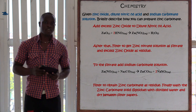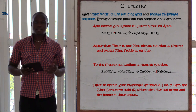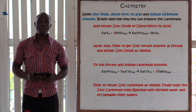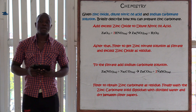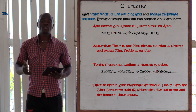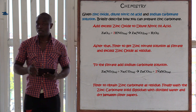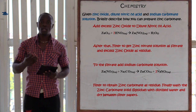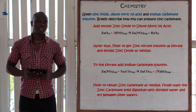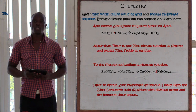Question number five: given zinc, excess zinc oxide, dilute nitric acid, and sodium carbonate in solution form — describe how to prepare zinc carbonate. This question comes from the topic of salts, considering solubility. Remember: all carbonates are insoluble except sodium, potassium, and ammonium carbonate. All nitrates are soluble. The first step is to add excess zinc oxide solid to the nitric acid. Zinc oxide is basic and nitric acid is acidic — this is a neutralization reaction. A base reacting with an acid gives salt and water. So zinc oxide plus nitric acid gives zinc nitrate plus water.